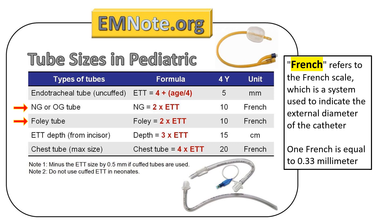Nasogastric (NG), Orogastric (OG), and Foley Tube Size Estimation: The formula for selecting an NG, OG, or Foley tube size for pediatric patients is calculated by multiplying the endotracheal tube size by 2. Note that endotracheal tubes are measured in millimeter inner diameter, but NG, OG, and Foley tubes are measured as French. The French scale is a system used to indicate the external diameter of the catheter; one French is equal to 0.33 mm.